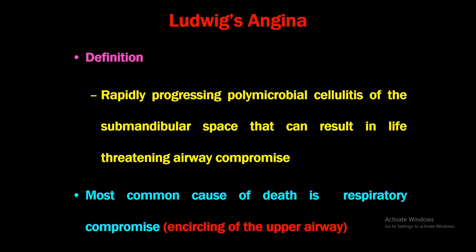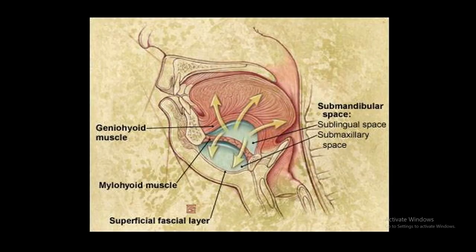Ludwig's angina is defined as a rapidly progressing polymicrobial cellulitis of the submandibular space that can result in life-threatening airway compromise. The most common cause of death in this condition is respiratory compromise — encircling of the upper airway. The name 'Ludwig's angina' essentially means strangling or strangulation. The infection spreads through the submandibular space — including the sublingual and submaxillary spaces separated by the mylohyoid muscle — causing the tongue to fall posteriorly, leading to respiratory distress.